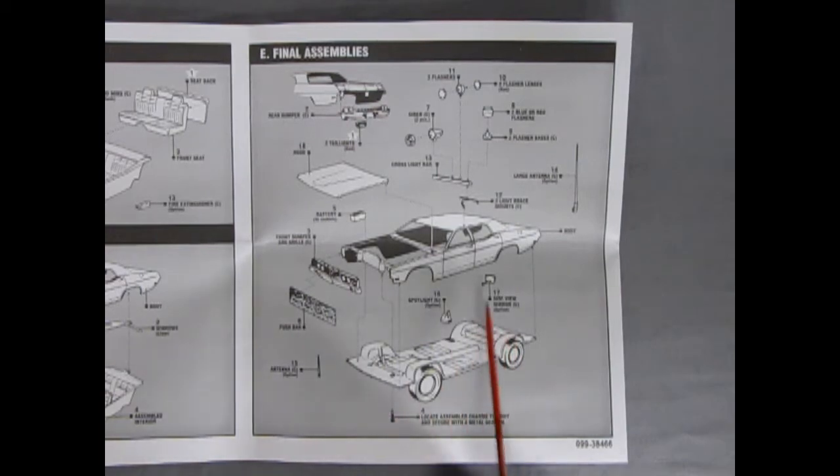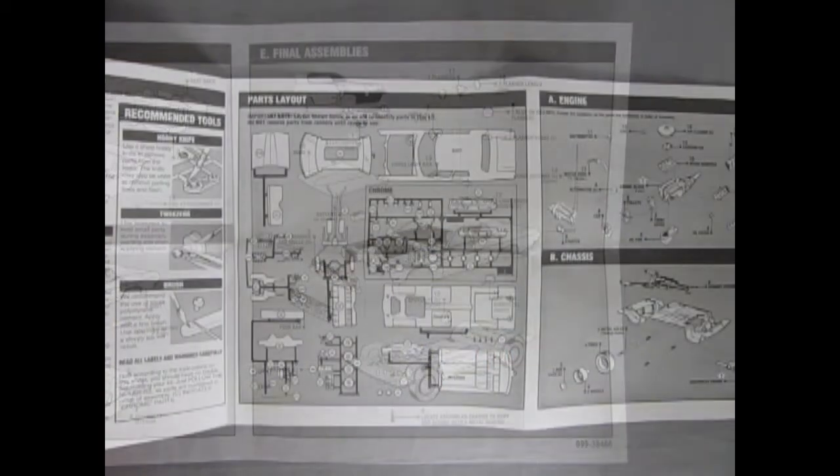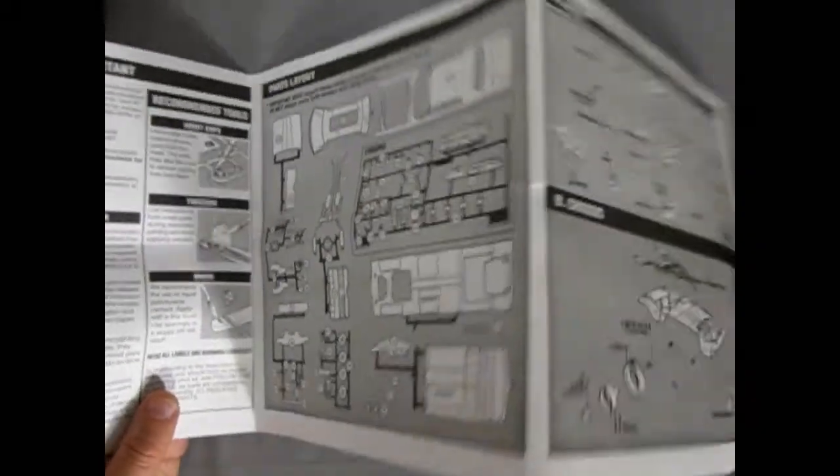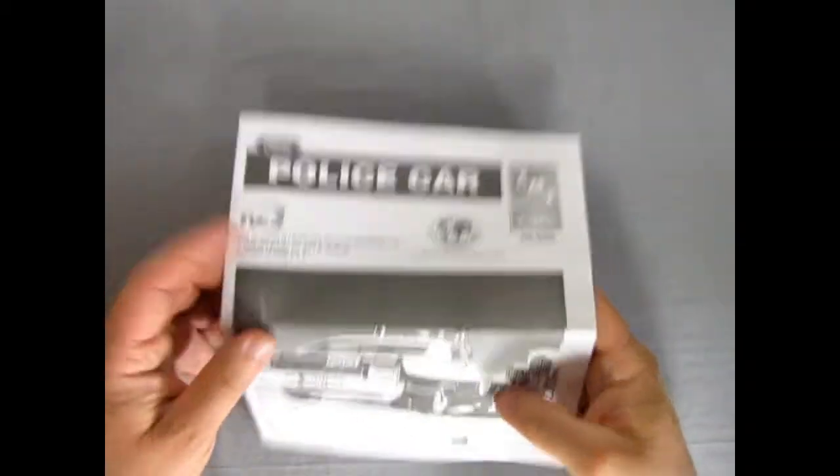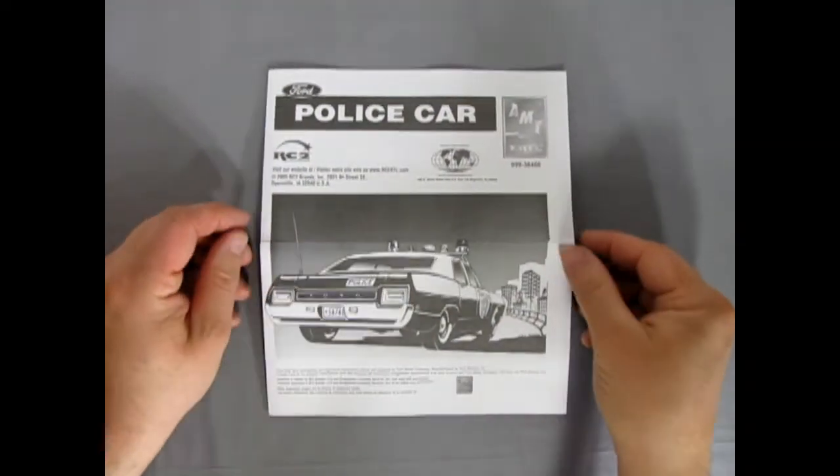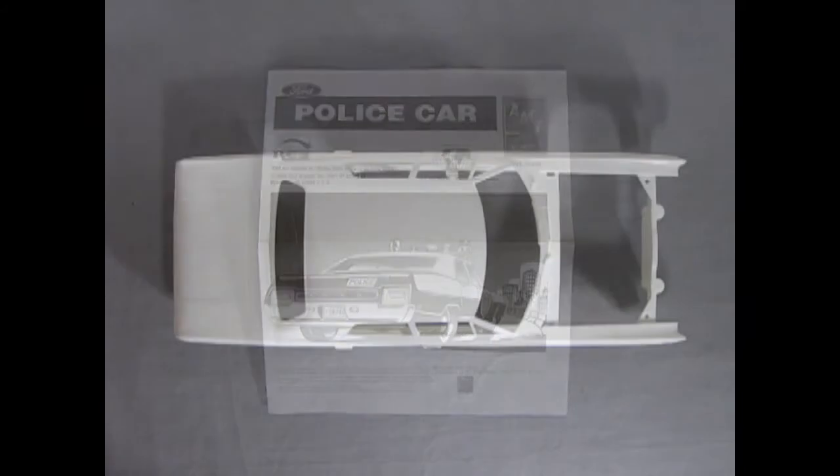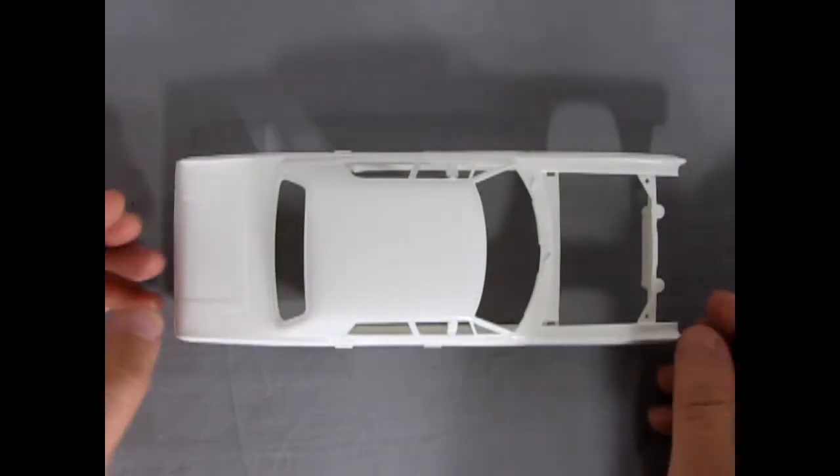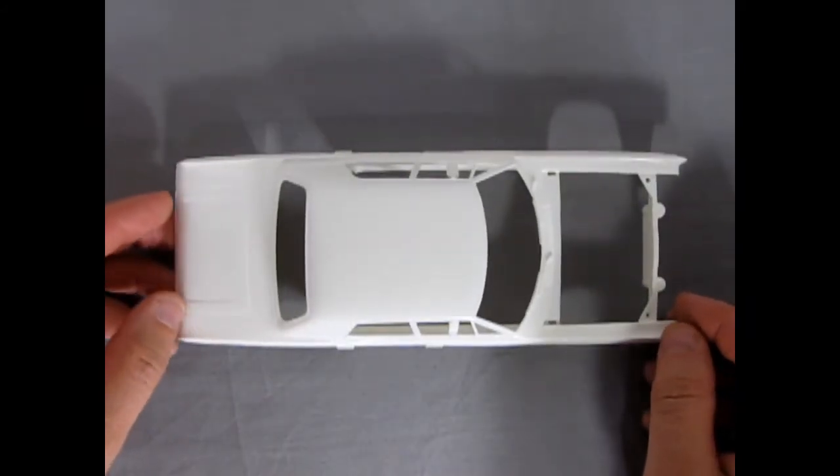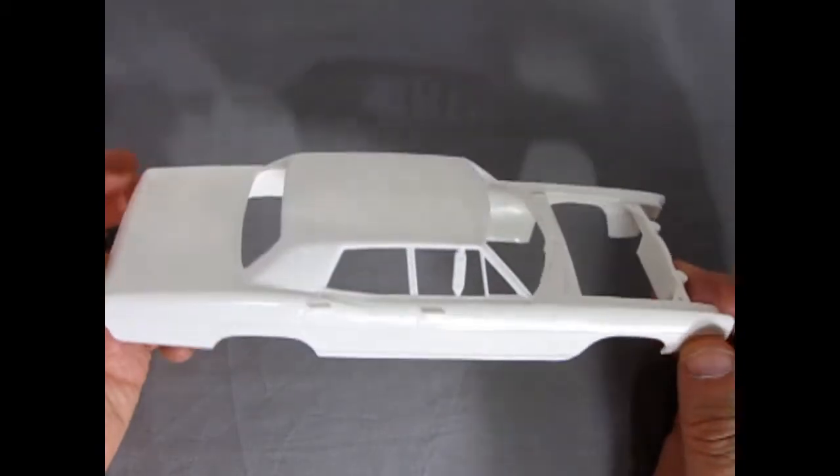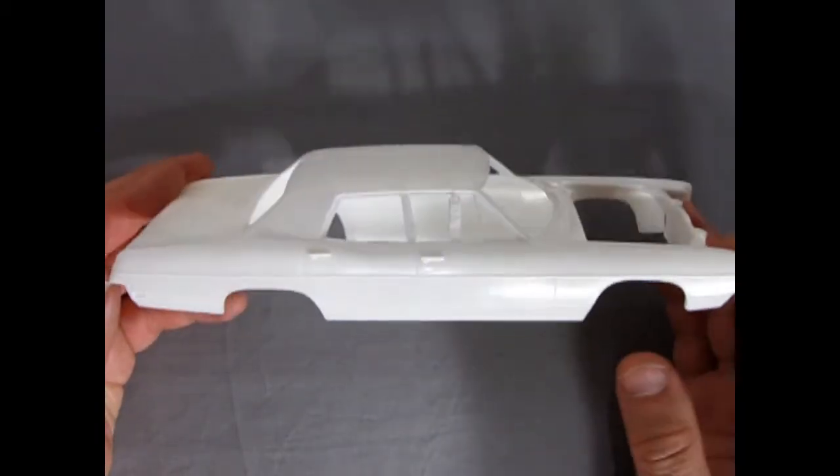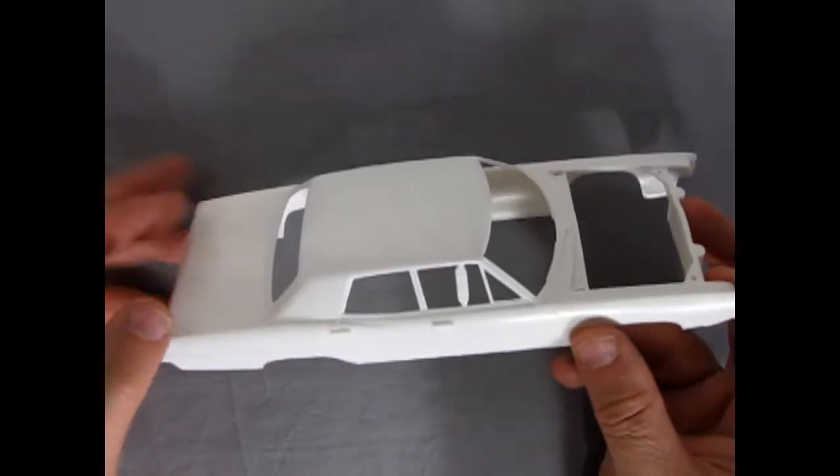All of this will be screwed onto the chassis and then we're ready to roll. Now that we got the skinny on our instruction sheet, it's time to blow this taco stand and get on the road. Here's our body of our 1970 Ford Galaxy 500. As you can see, it's got the correct four doors for police pursuit work and for putting the perps in the back.